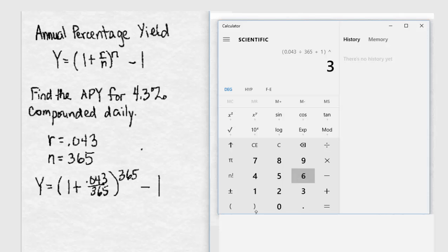X to the y, 365. Now, you could hit equals here, but you'll notice if I hit the subtraction, it's going to go ahead and calculate that 365th power, which is what we want.